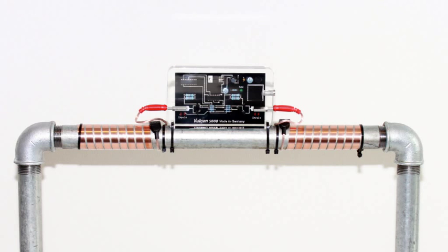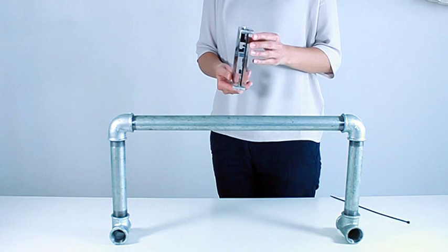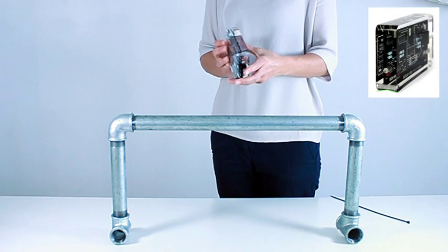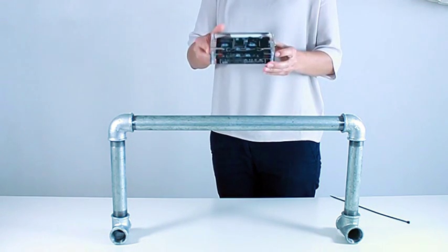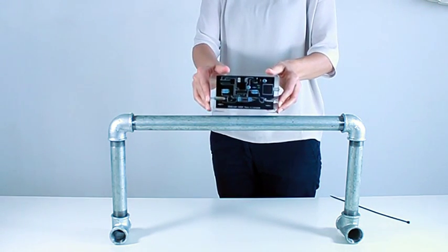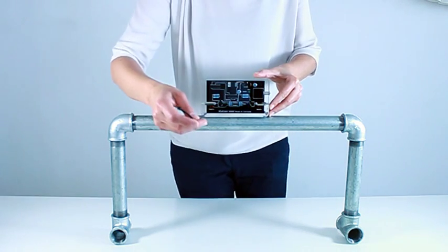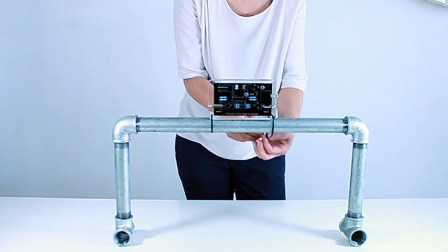You will now see a step by step installation of Vulcan. We start with the electronic block. It is V-shaped at the bottom, so it sits nicely on a round pipe. Please place the electronic block on the pipe and fix it with a cable clip. Do this on both sides of the unit.